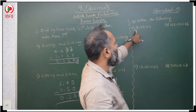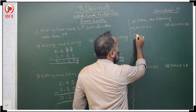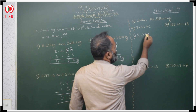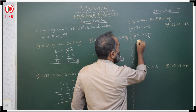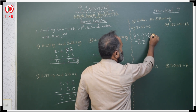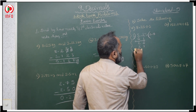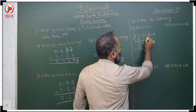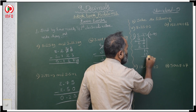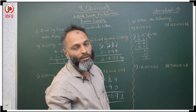Next, solve: 8.25 divided by 3. In the 3 times table, 3 twos are 6; 8 minus 6 is 2. After the decimal point: 3 sevens are 21; remainder 1. Bring down 5: 3 fives are 15; 15 minus 15 is 0. The answer is 2.75.